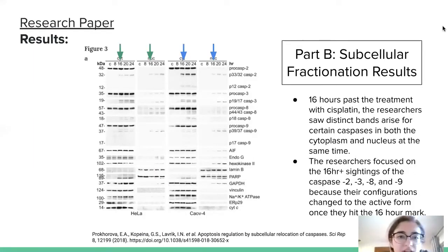In Figure 3, the arrows indicate the 16-hour marks in each lane. Using the same technique 16 hours after treatment with cisplatin, a tumor drug, the researchers saw distinct bands arise for certain caspases in both the cytoplasm and nucleus. They focused on the 16-hour sightings of caspases 2, 3, 8, and 9 because their configurations changed at the 16-hour mark.